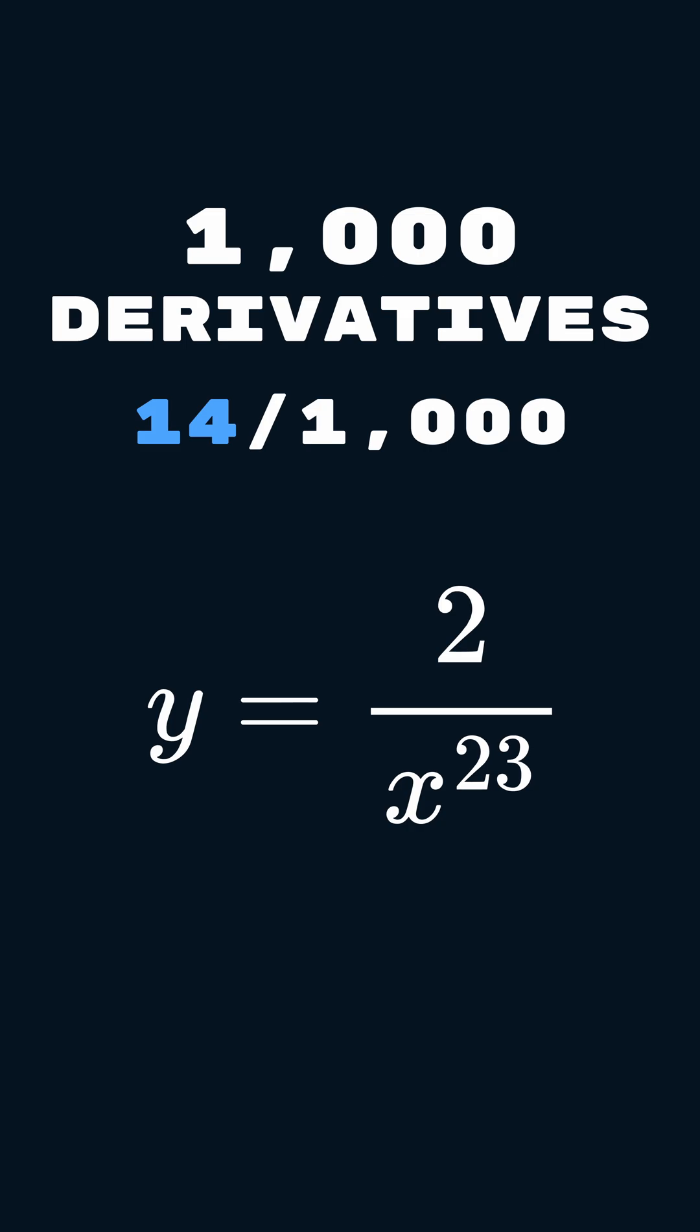This is day 14 of doing 1,000 derivatives, one every single day, and today's derivative is y equals 2 over x to the power of 23.